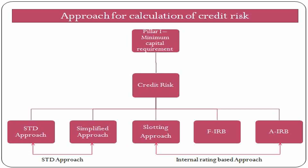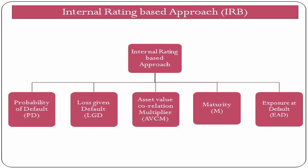Under the IRB framework, there are five key risk components which we need to understand. These risk components are PD, which is probability of default; LGD, which is loss given default. In Basel III, the committee introduced another component which is AVCM, meaning asset value correlation multiplier. The fourth is M, which is effective maturity, and fifth is EAD, which is exposure at default. These risk components can be estimated by the bank or by the supervisor. For estimating internal estimates like PD, LGD, and EAD, the bank must consider all relevant information and methods available.